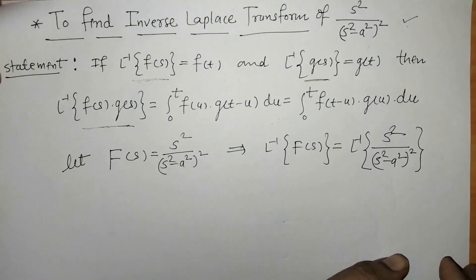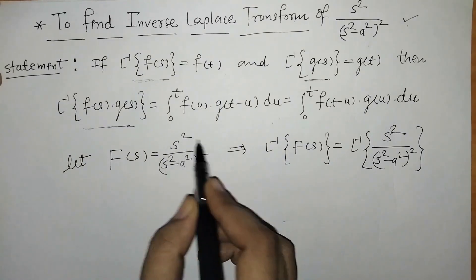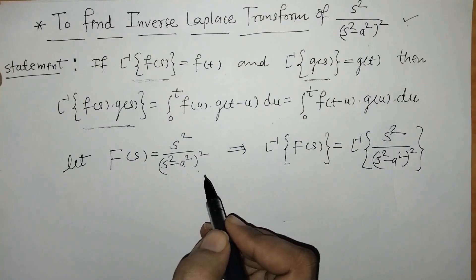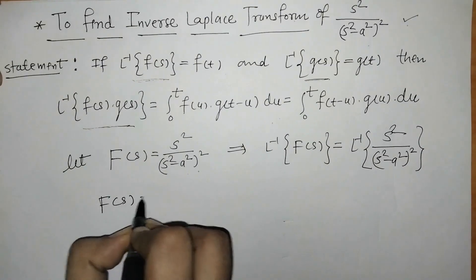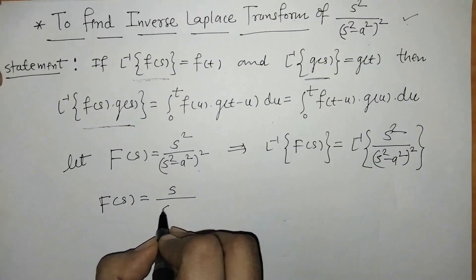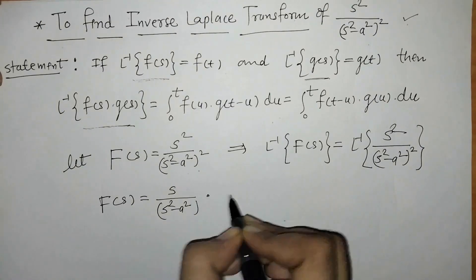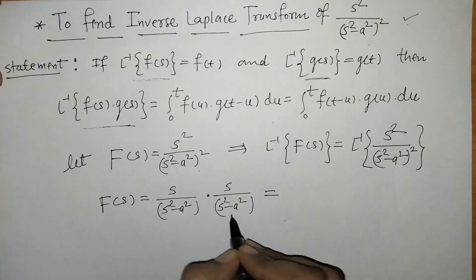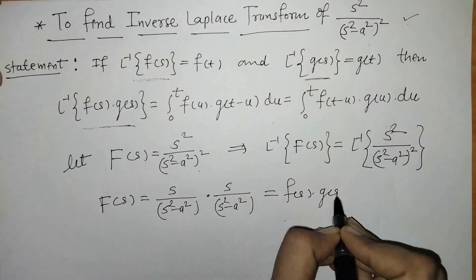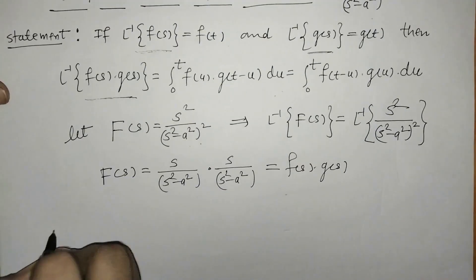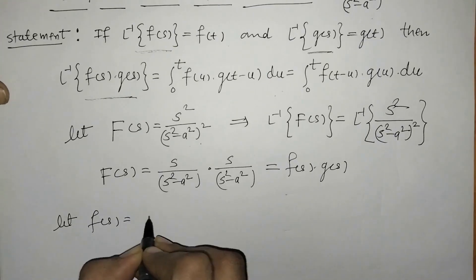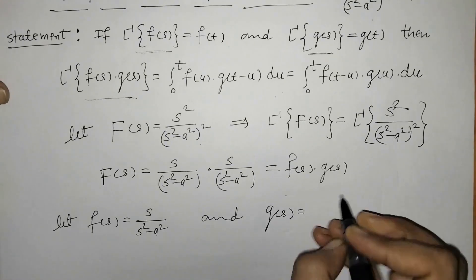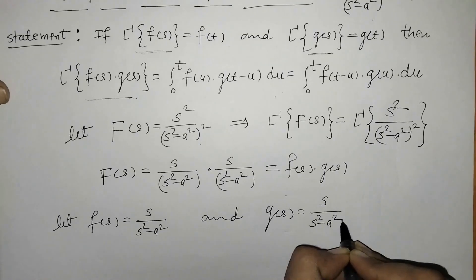Now for applying the convolution theorem, we have to write down this given function as a product of two functions such that we can find the inverse Laplace easily. So we can write F(S) as S/(S² − A²) into S/(S² − A²). This is the first function and this one is the second, so this is F(S) into G(S). We write F(S) = S/(S² − A²) and G(S) = S/(S² − A²).